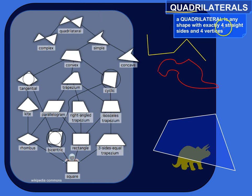But the sides have to be straight sides and there have to be exactly four vertices. So down here, this is a quadrilateral. We've got one, two, three, four straight sides and we've got four vertices.